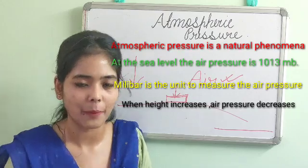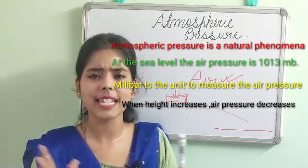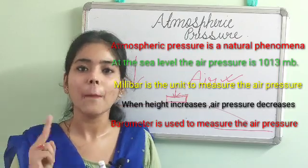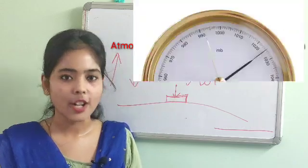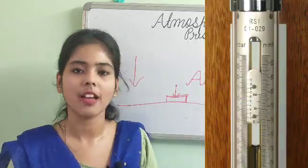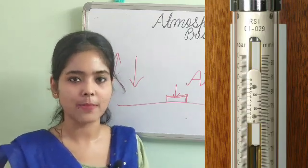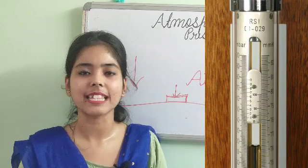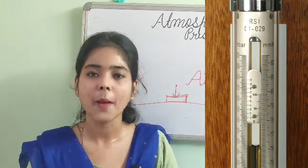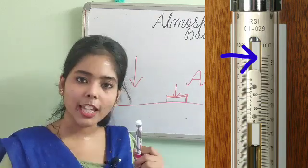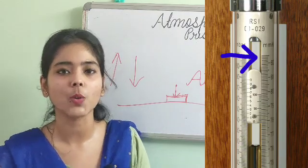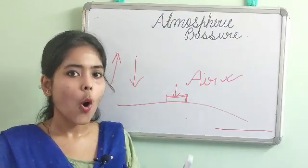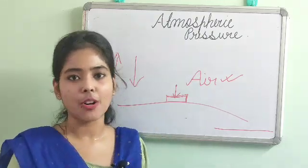There are basically different types of instruments used to measure atmospheric pressure, but in geography two major instruments are used: number one is the aneroid barometer, and number two is the Fortin barometer. In our country we are basically dependent on the Fortin barometer. A barometer is a tube-like structure filled with mercury — the rise and fall of the mercury generally indicates the air pressure of that particular region.